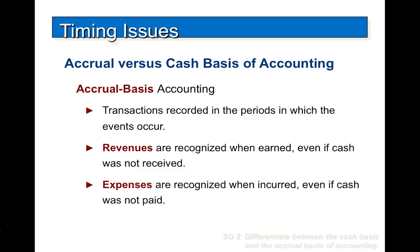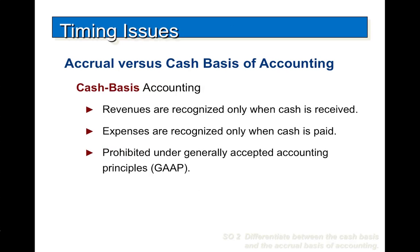An alternative to the accrual basis is the cash basis of accounting. Under cash basis accounting, companies record revenue only when cash is received and record expenses only when cash is paid. The cash basis of accounting is prohibited under generally accepted accounting principles. Why? Because it does not record revenue when earned, thus violating the revenue recognition principle. Similarly, it does not record expenses when incurred, which violates the expense recognition principle.